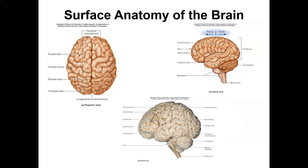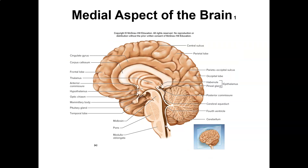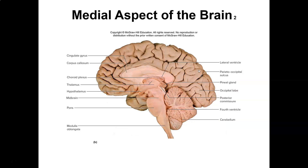Surface anatomy: frontal lobe, central sulcus, parietal lobe, occipital lobe. Here's another view — the cerebellum, pons, medulla oblongata, and pituitary gland. This is not an anatomy class, so I'm not going to quiz you on all this. This should be a refresher — if not, maybe you need to take some anatomy.